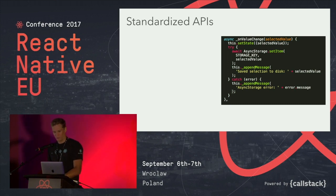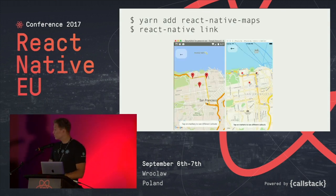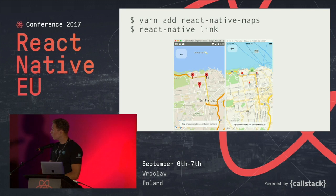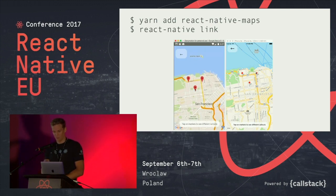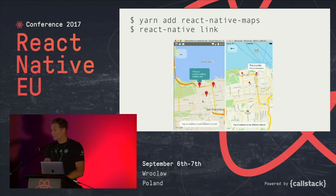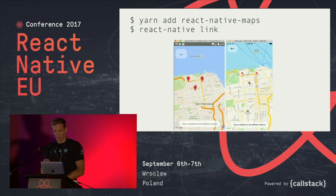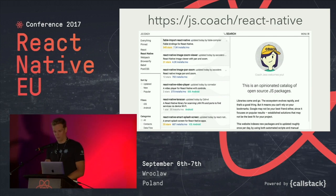Then there was a great community effort around third-party libraries, made possible thanks to Mike and Alex who built the react-native link command that lets you link third-party native code into your project. That's when I felt like the project really took off. For example, you can add a map to your app pretty easily, and there's a whole repository of popular libraries.